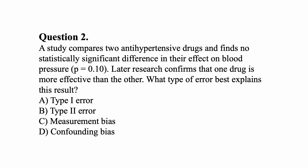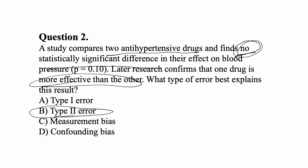Question two: A study compares two antihypertensive drugs and finds no statistically significant difference in their effect on blood pressure. The p-value is 0.1. Later research confirms that one drug is more effective than the other. What type of error best explains this result? The study finds no statistically significant difference, but later research confirms a real difference exists. This would be an example of type 2 error — a false negative — when you fail to reject a false null hypothesis. Remember the fire alarm that didn't go off.